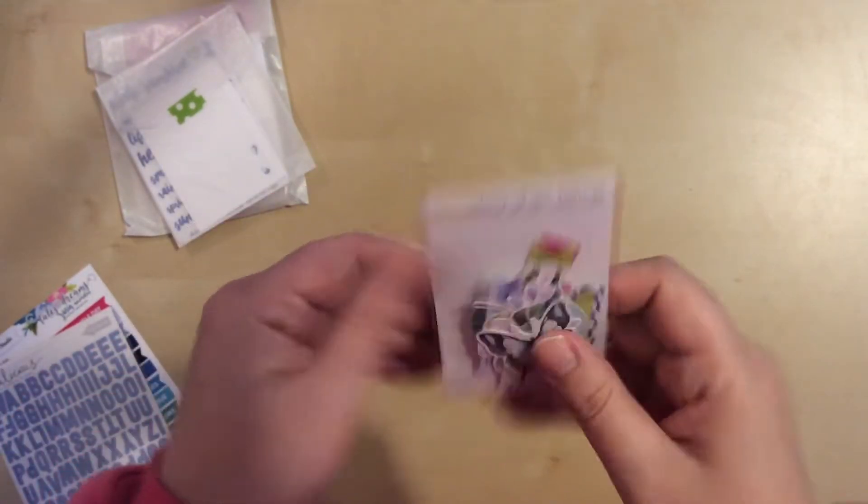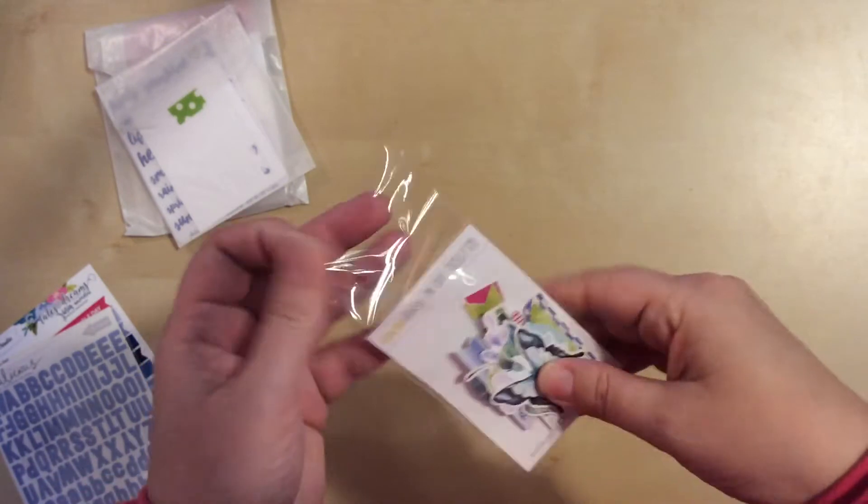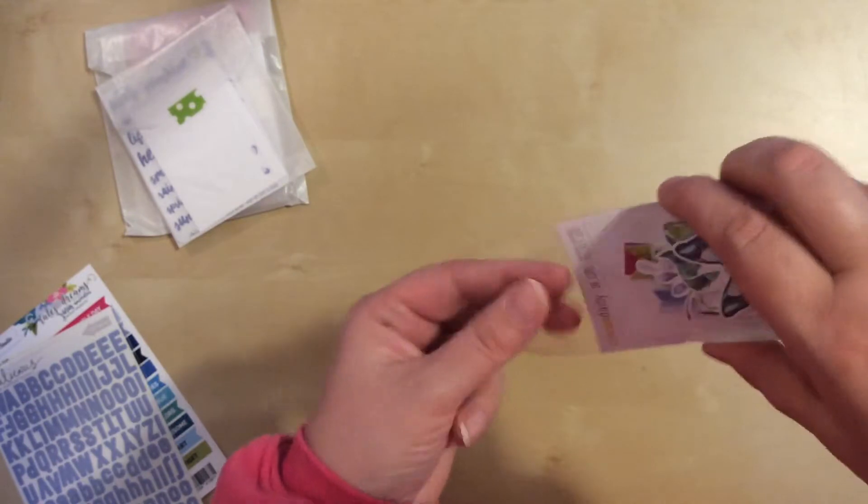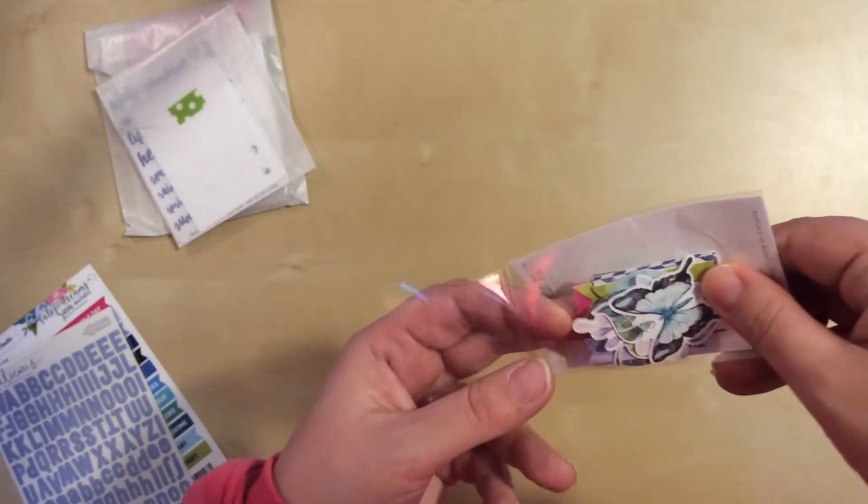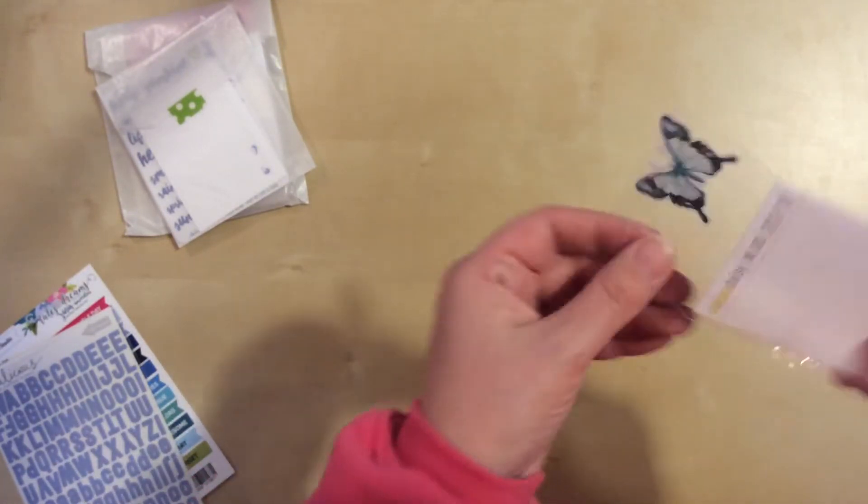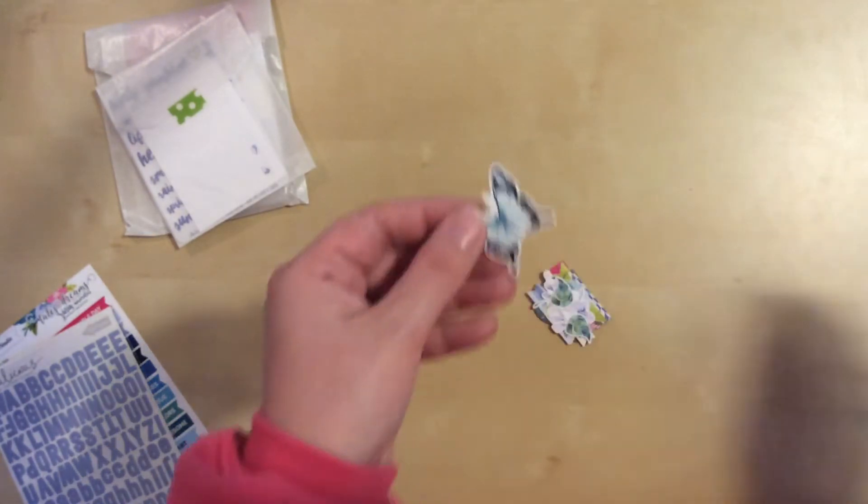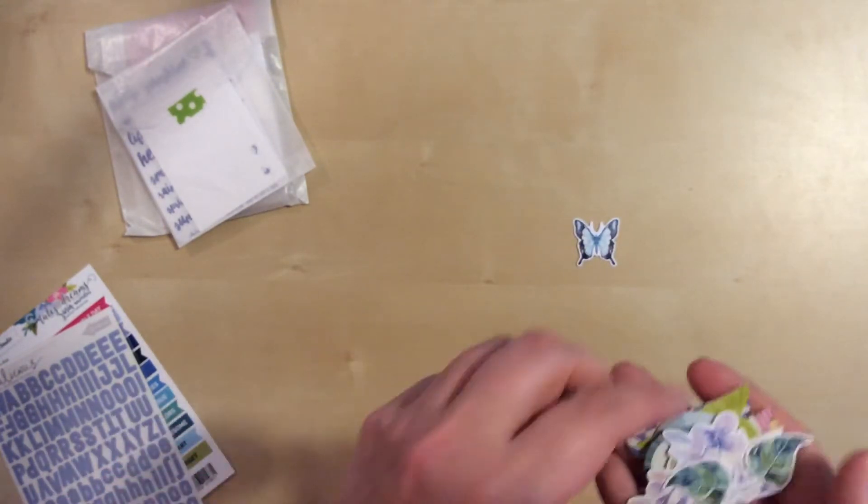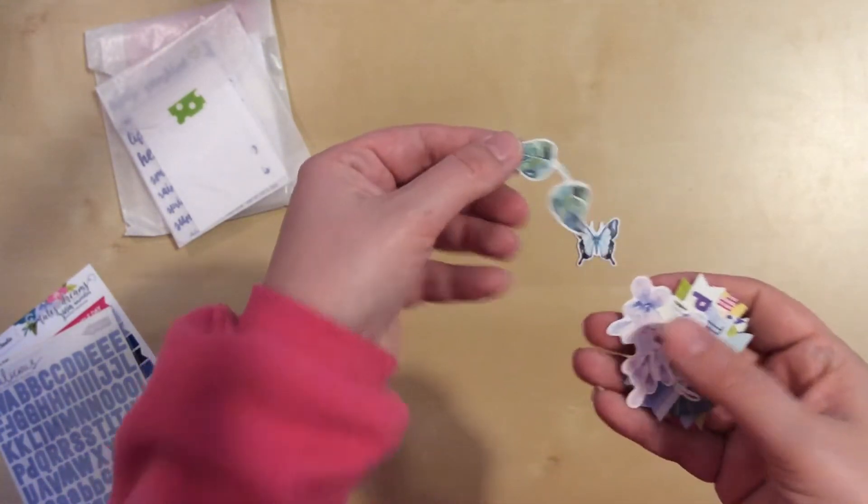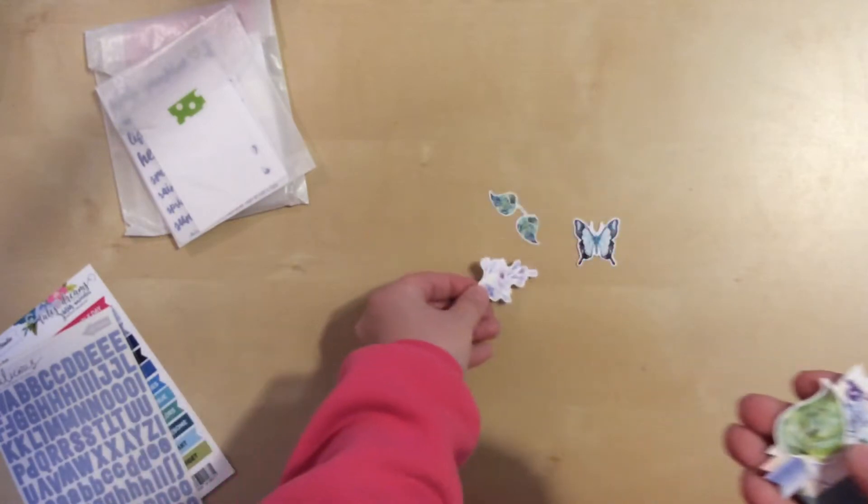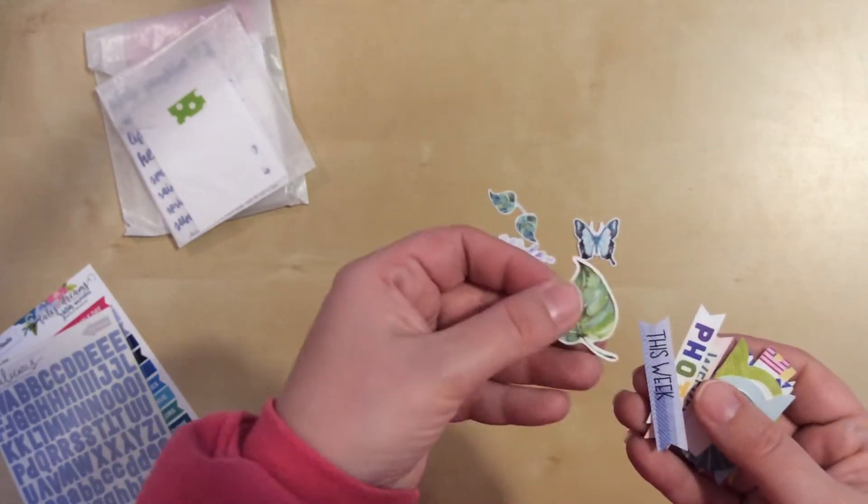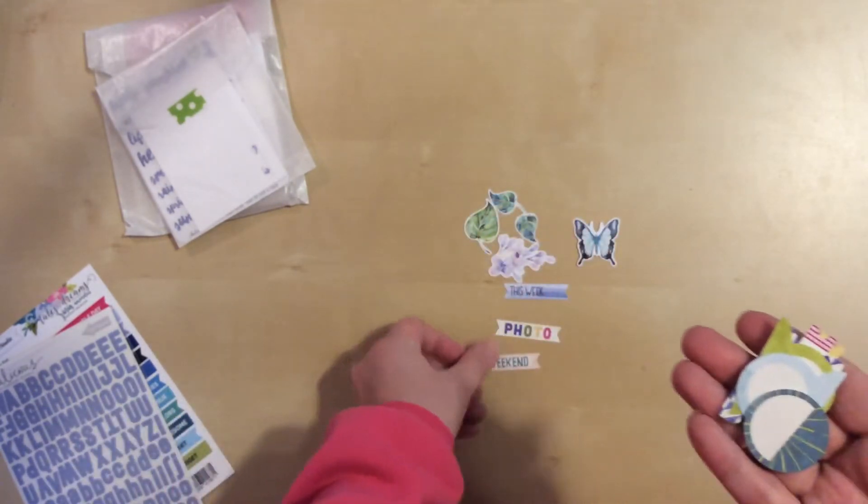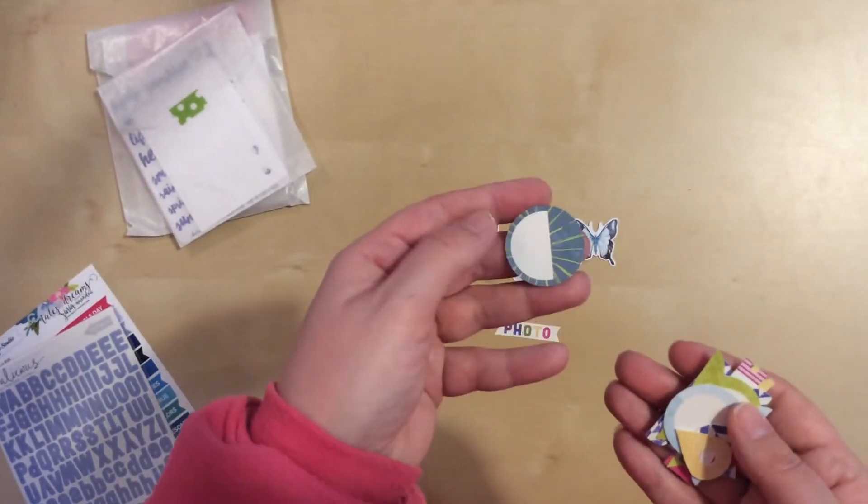Now for the little die cut pack. I was super happy with them last month. There's the first one, butterfly, I love it. Just some little leaves, more of those purple flowers that match the paper. This week, photo, weekend - those are all pretty generic. I could use those in almost anything.